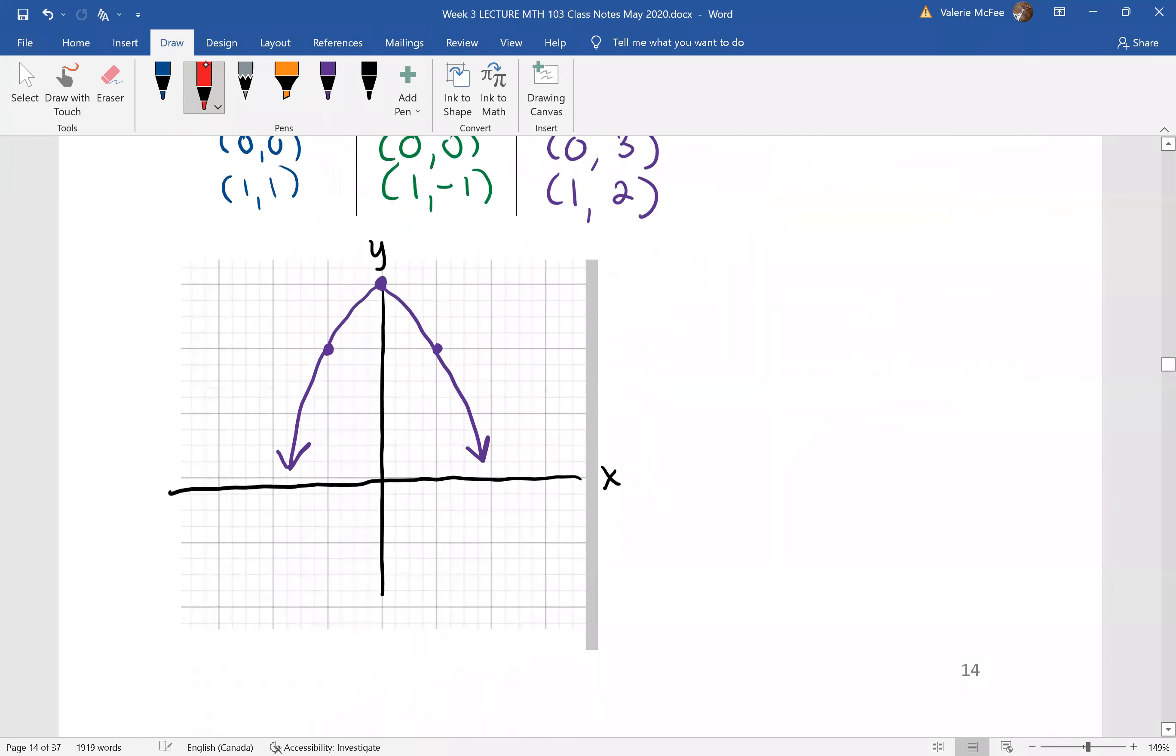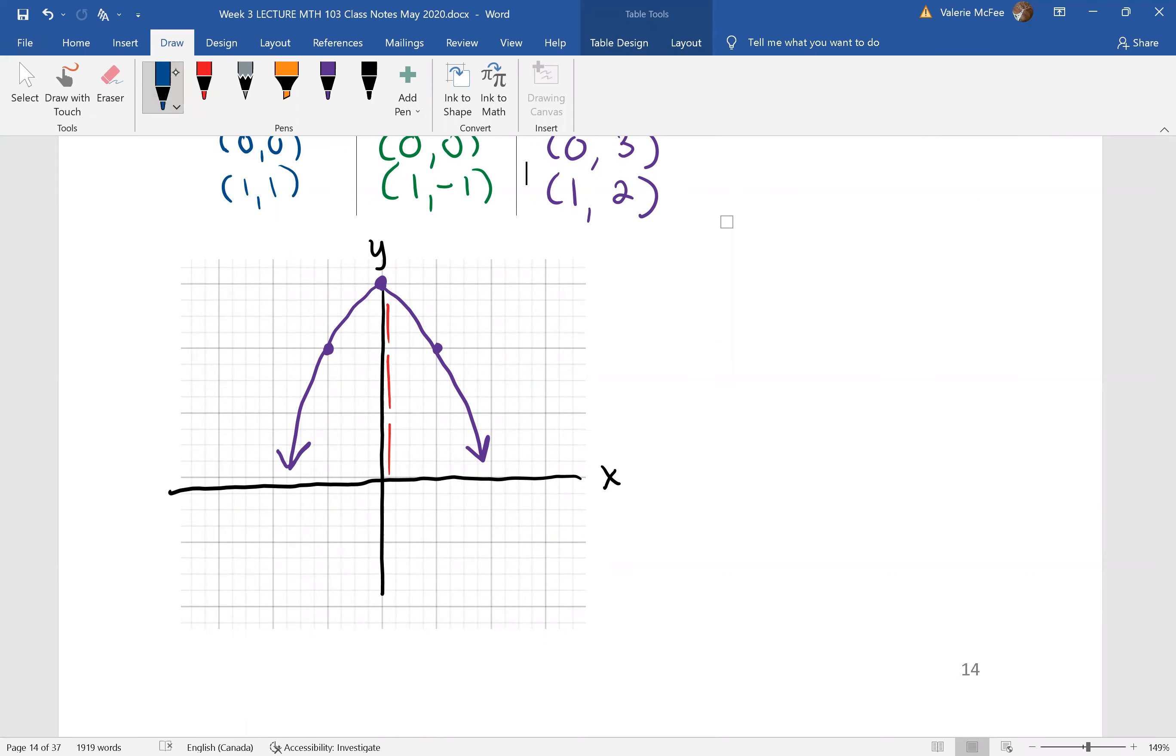And that's what happened here. The graph is now opening down. So we reflected it across the x axis, and then we shifted it up 3 units. What's the domain and range for this function? The domain for all quadratic equations is the set of all real numbers. We can see that this graph is going to have its lowest values at negative infinity, and its highest value is at positive 3 on the y axis.